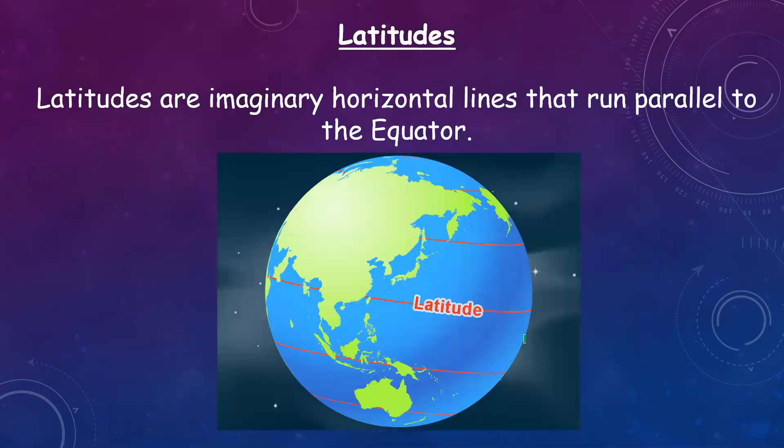Now let's learn about latitudes. Latitudes are imaginary horizontal lines that run parallel to the equator. These lines run in an east to west direction.